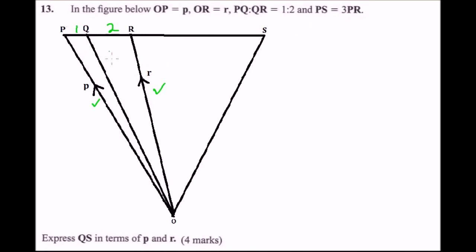We are also told that PS equals 3PR. So if PR is 1 part, then PS is 3 parts, meaning the remaining portion is 2. So PS equals 3PR, meaning PR fits into PS three times.